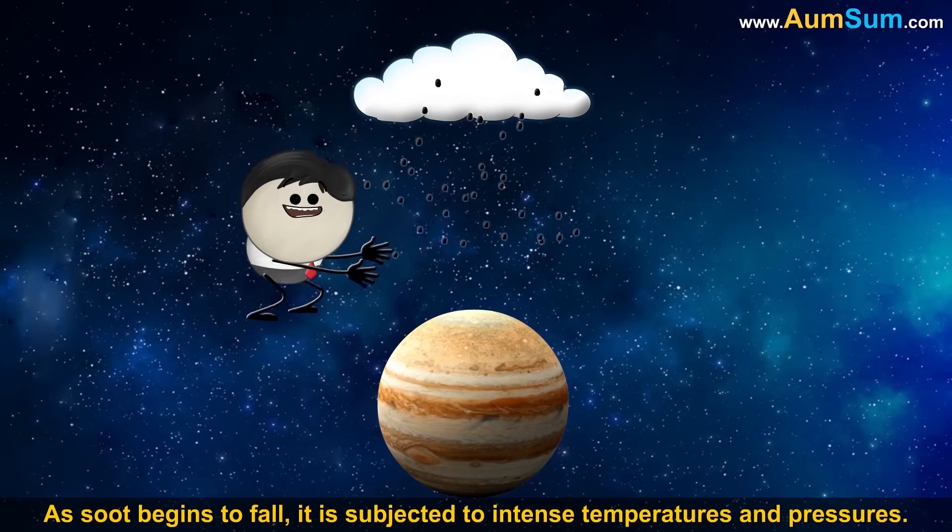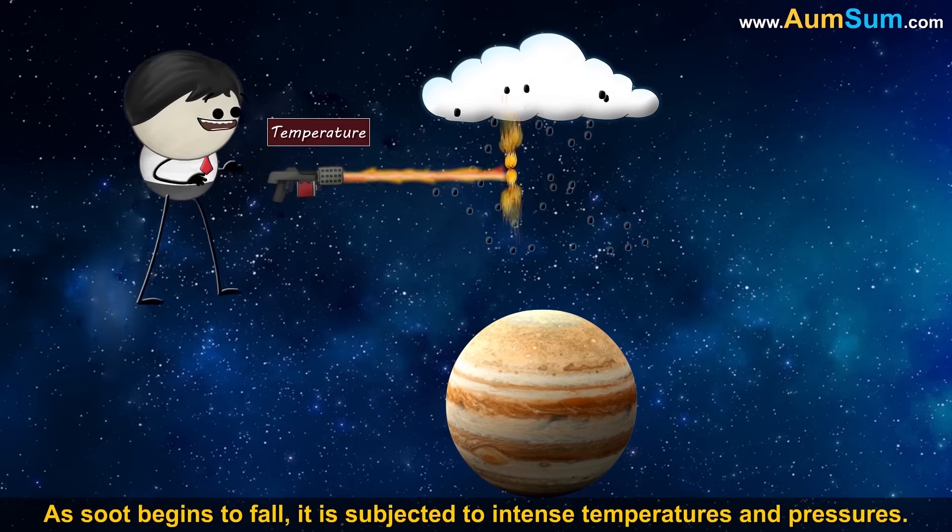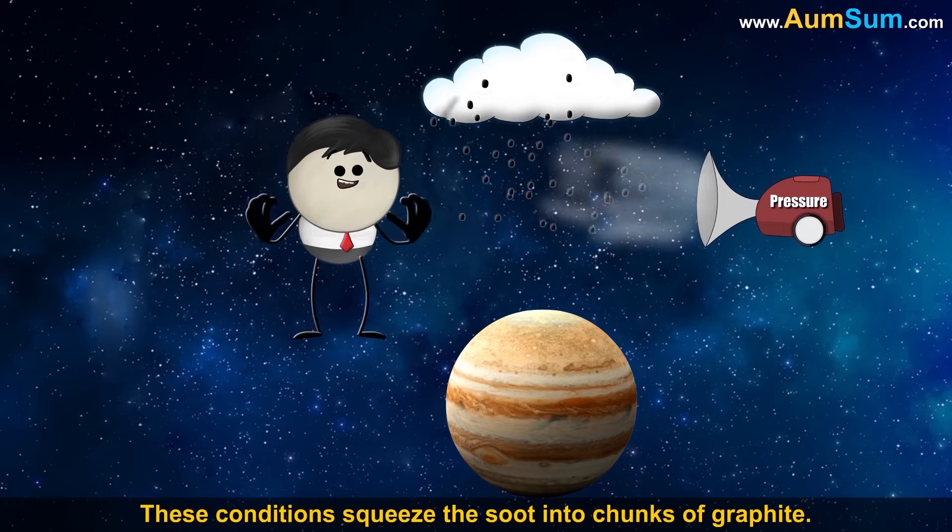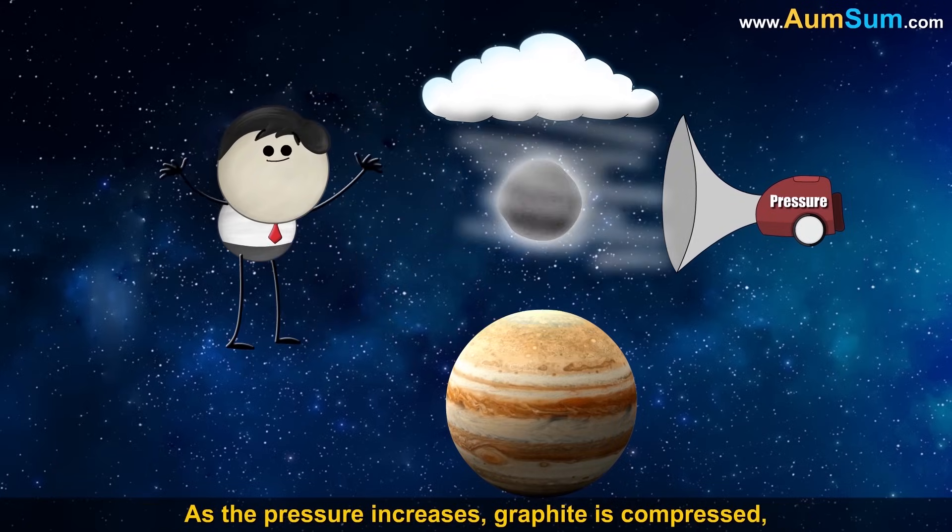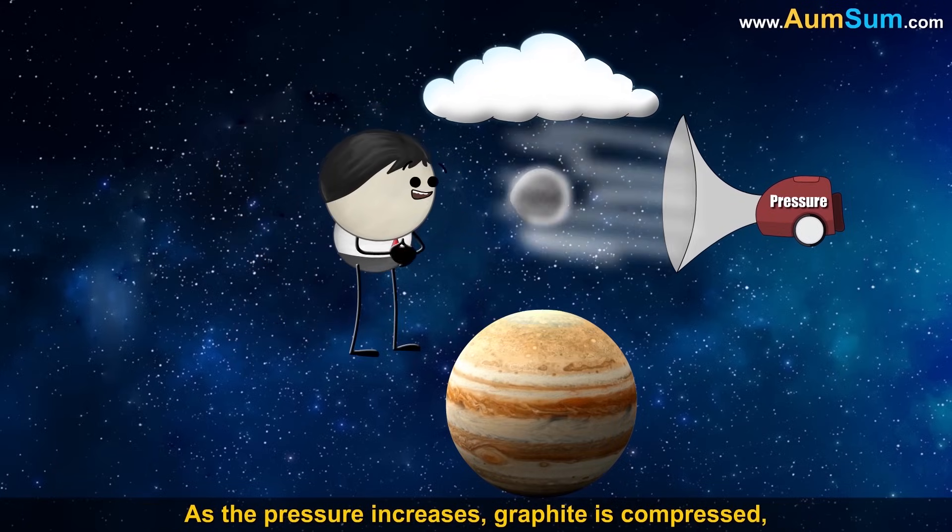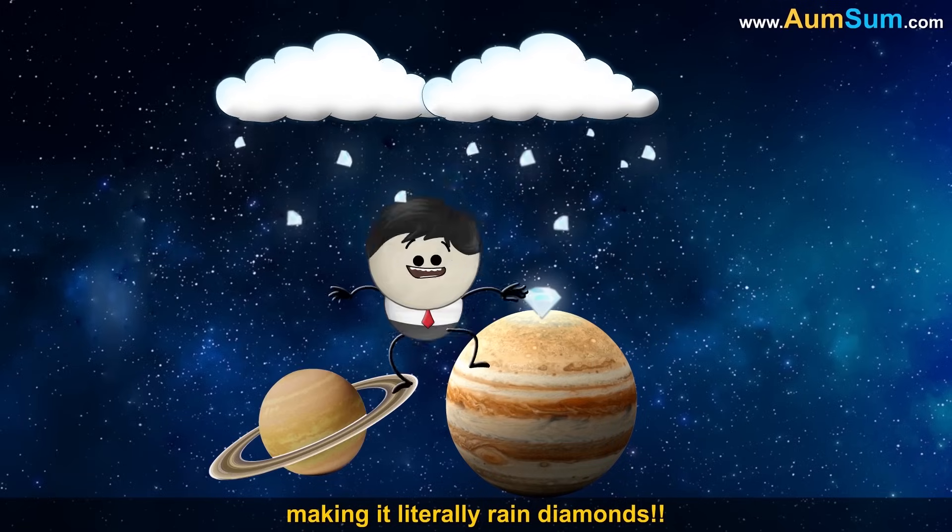As soot begins to fall, it is subjected to intense temperatures and pressures. These conditions squeeze the soot into chunks of graphite. As the pressure increases, graphite is compressed, making it literally rain diamonds.